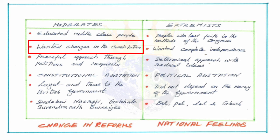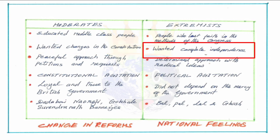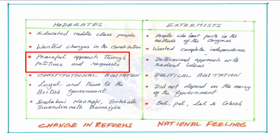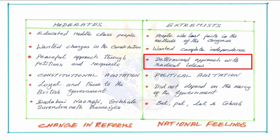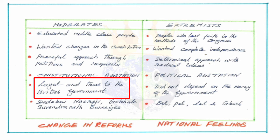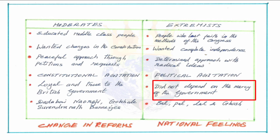The moderates wanted changes only in the constitution — a separate place for themselves and changes in policies. But the extremists demanded complete independence. The moderates pursued constitutional agitation in policy-making through a peaceful approach with petitions and requests. The extremists had a determined approach, demanding complete independence with radical ideas on how to achieve it. Since the moderates adopted a peaceful approach, they remained loyal to the British government. The extremists, demanding freedom, did not want to depend on the mercy of the British government and rose ferociously against it.